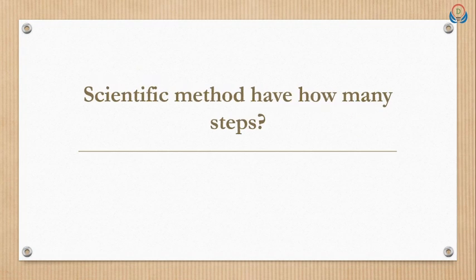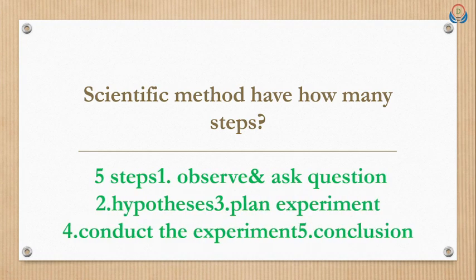Today in 8th class, I am going to discuss the first lesson important bits. It's a science lesson. So let's begin our class. Scientific method — how many steps are there? The answer is five steps. The five steps are: first, observe and ask a question; second, hypothesis; third, plan experiment; fourth, conduct the experiment; and fifth, conclusion.